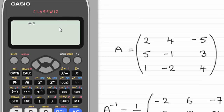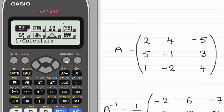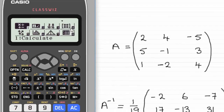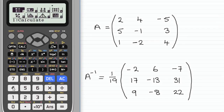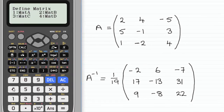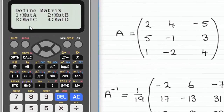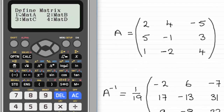What we need to do is choose the menu and make sure we go to the matrix menu, which on this calculator is number 4. Selecting 4 takes us into that menu. We've got the choice of 4 matrices: A, B, C, or D. I'm going to choose matrix A, which is option 1.